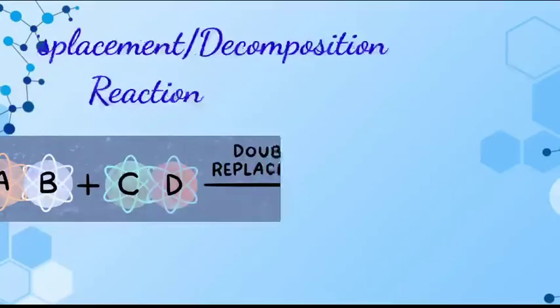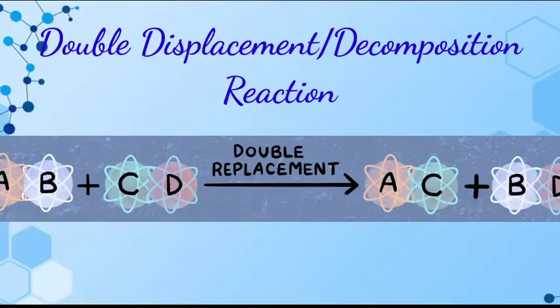The fourth type of reaction is double decomposition reaction. This type of chemical change involves two compounds in a solution that react to form new compounds by mutual exchange of radicals. Double decomposition reaction is also called double displacement reaction.